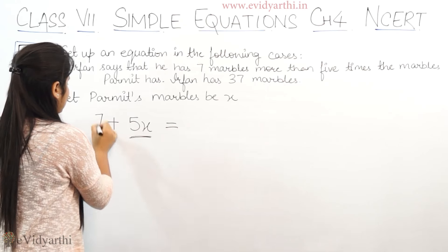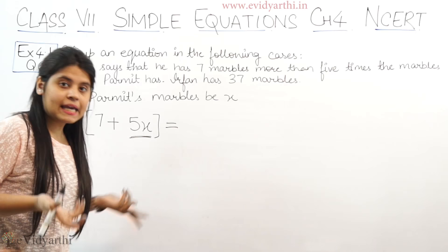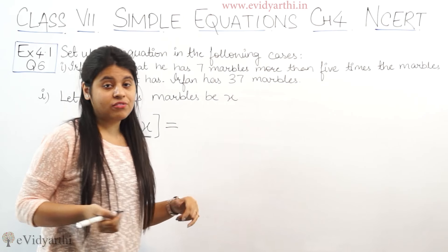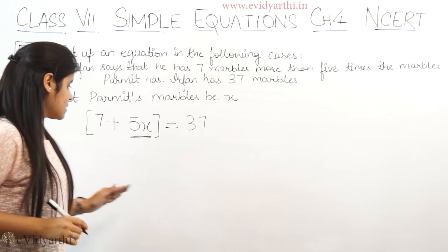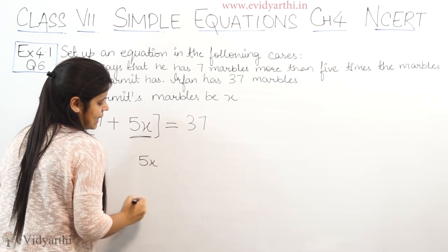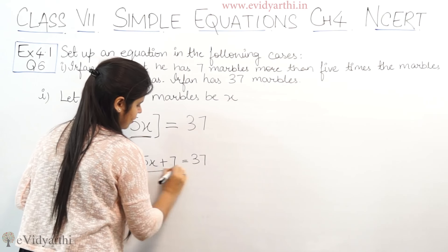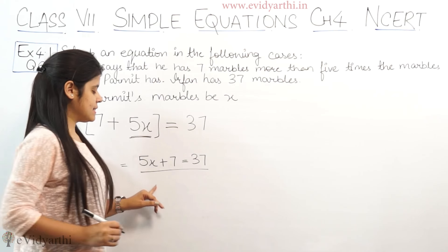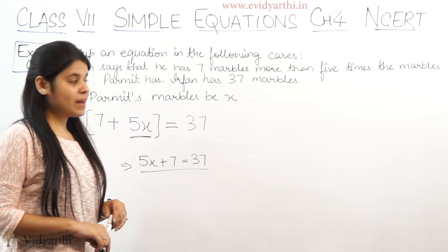Ab yeh jo poori equation hai yeh kis ke liye hai? Yeh jo yahan pe saari humne equation likhi hai yeh kis ke marbles hai? Irfan ke. Aur last mein hume given hai ki Irfan ke paas kitne marbles hain? 37. So this means ki is equation ko hum aise likh sakti hain: 5x plus 7 equals to 37. So humein isme equation likhni thi. And this is the equation. 5x plus 7 equals to 37. Fine?